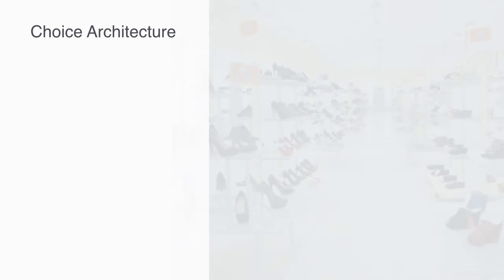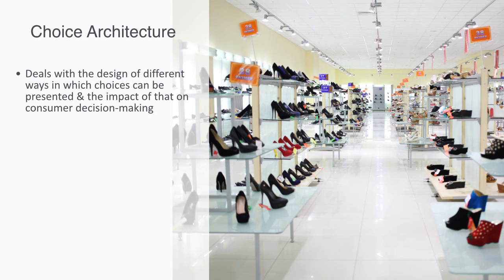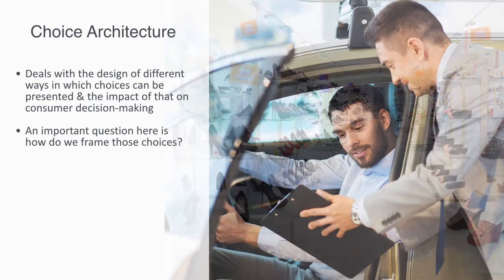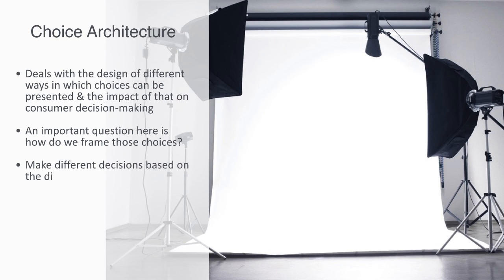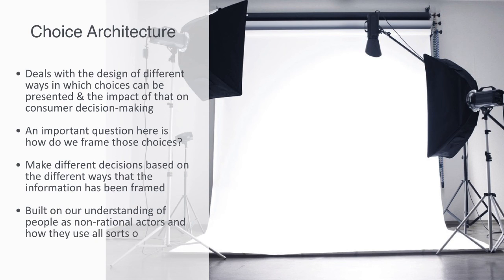Choice architecture is another outgrowth from behavioral economics, which deals with the design of different ways in which choices can be presented to consumers, and the impact of these presentations on consumer decision making. For example, the number of choices presented, how we arrange those choices, or which one is the default option. An important question is how we frame those choices — when selling a car, do we tell prospective buyers the amount of fuel to run the car, or the amount of money? Although they relate to the same underlying information, people often make different decisions based on how that information has been framed. Choice architecture is built on our understanding of people as non-rational agents and how they use shortcuts to cope when making difficult decisions.